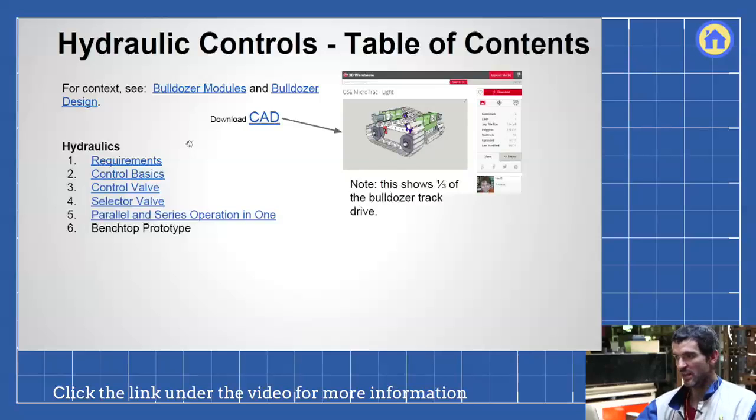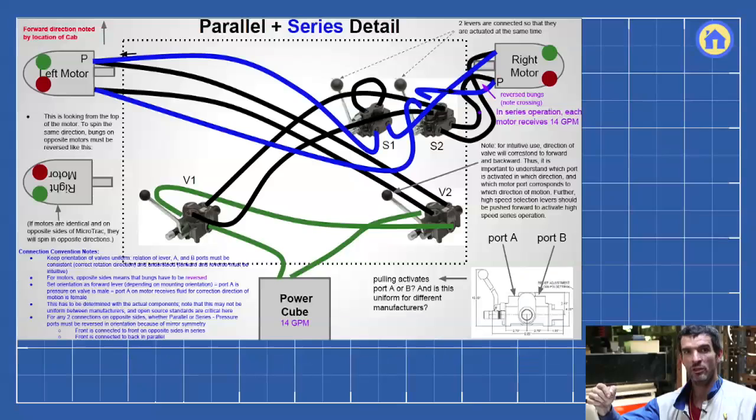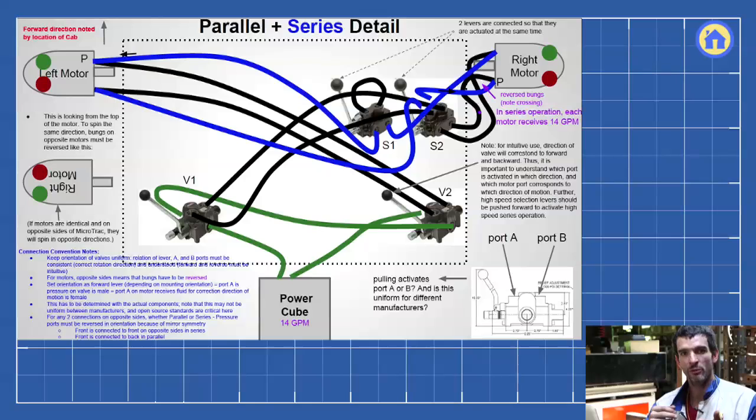The main concept here is that in this implementation of hydraulic controls, the one piece of innovation was that we made a circuit which allows you to run the tractor in parallel or series configurations in terms of the drive of the hydraulics. Parallel means high torque, low speed. Series configuration through the wheel motors means faster speed, lower torque.